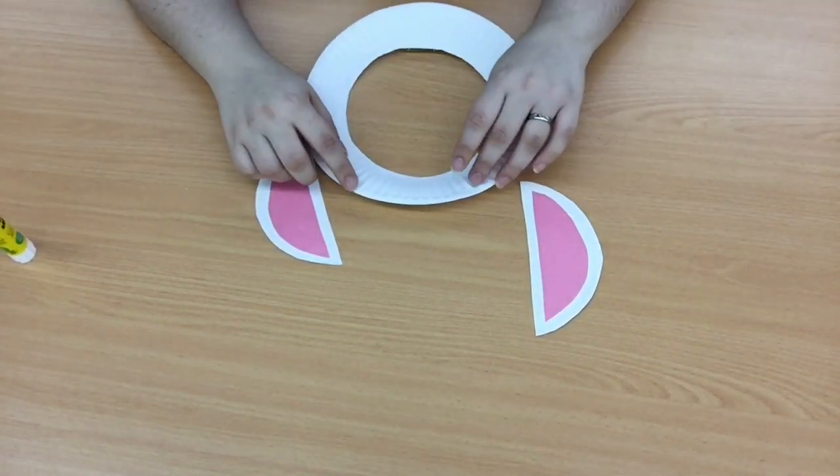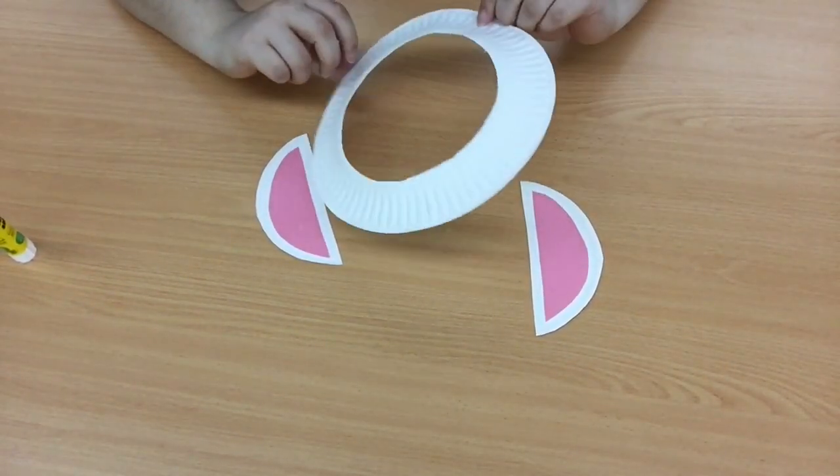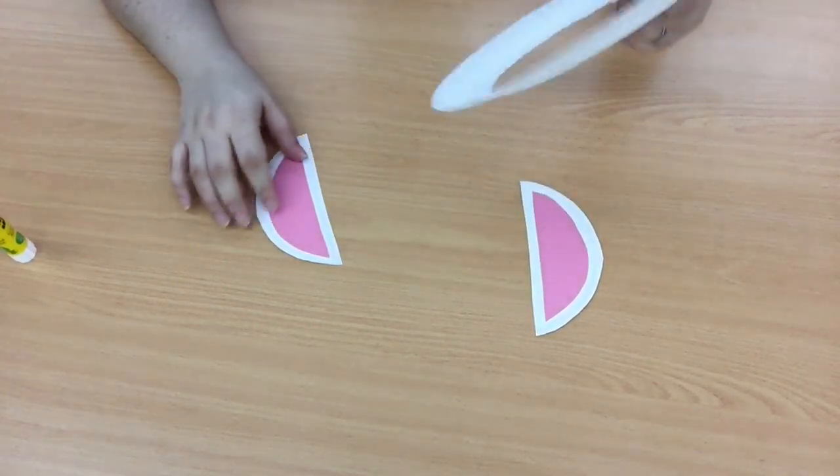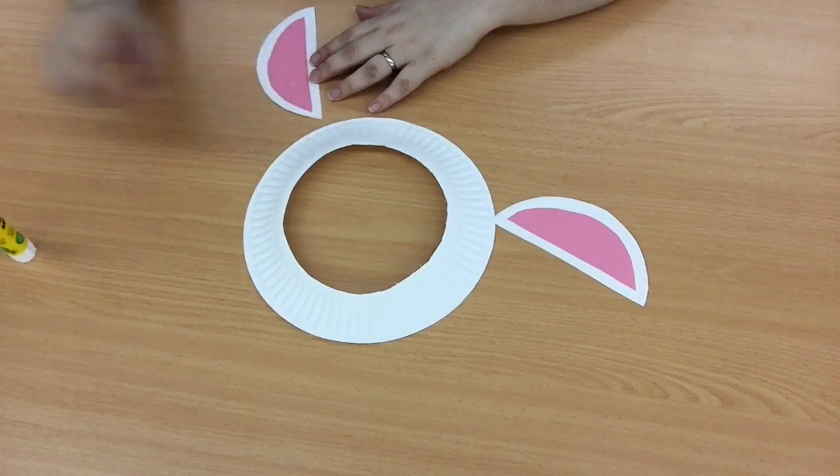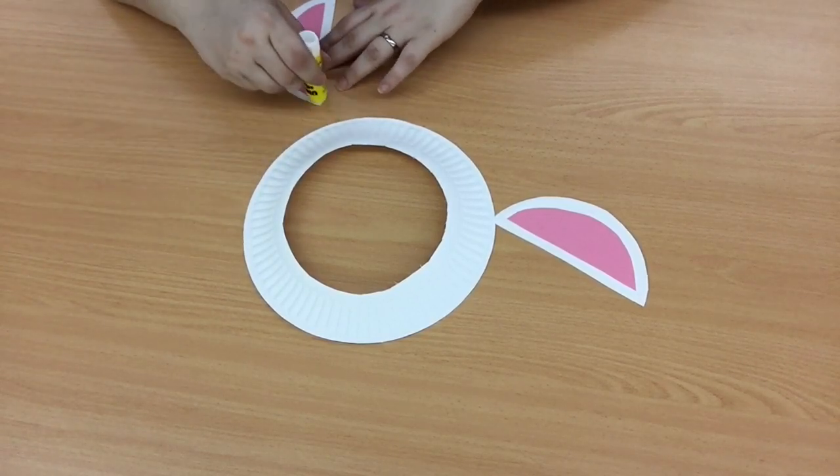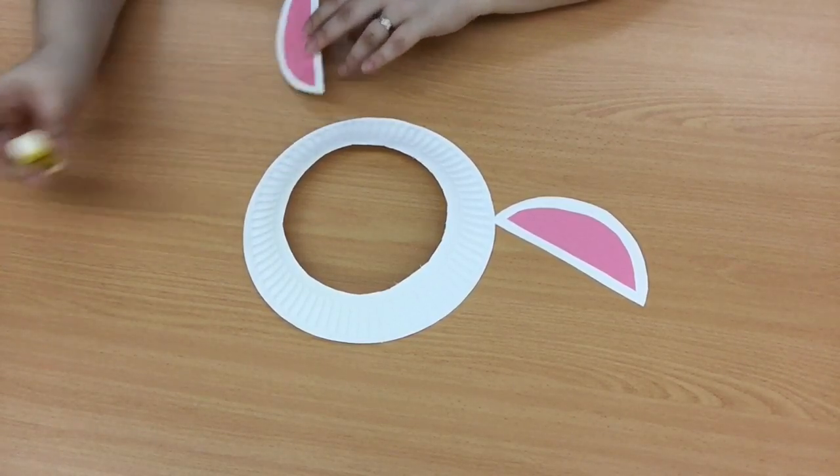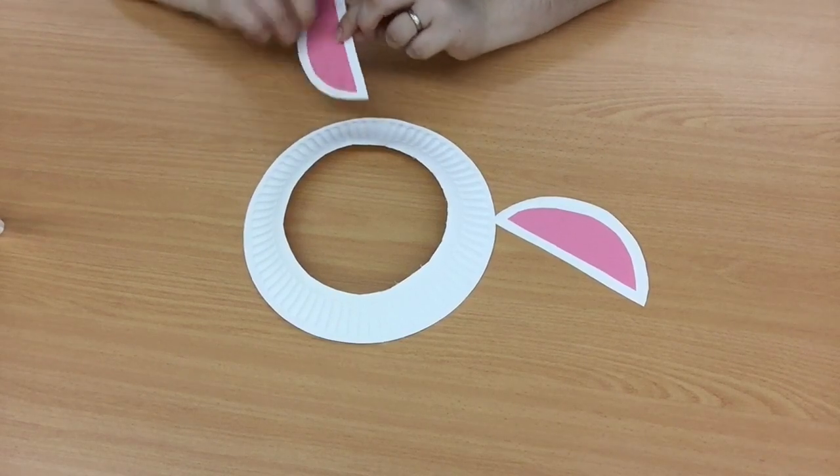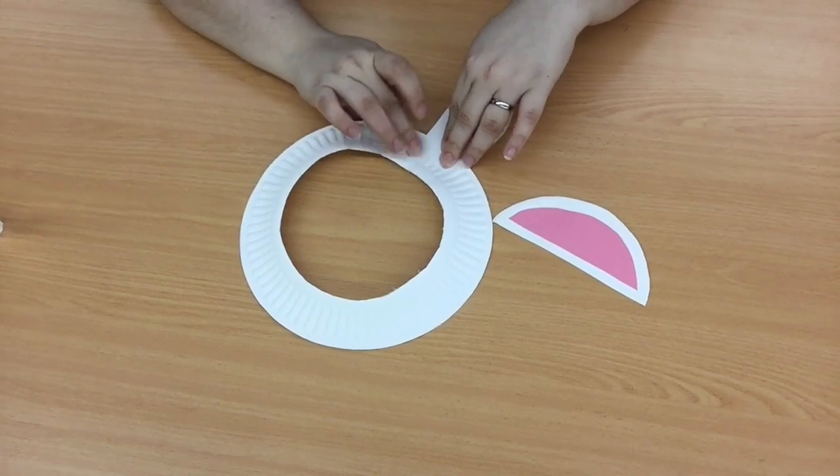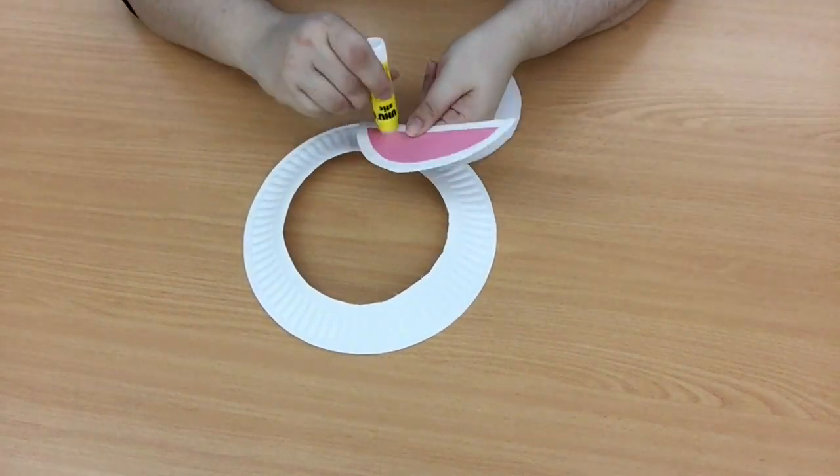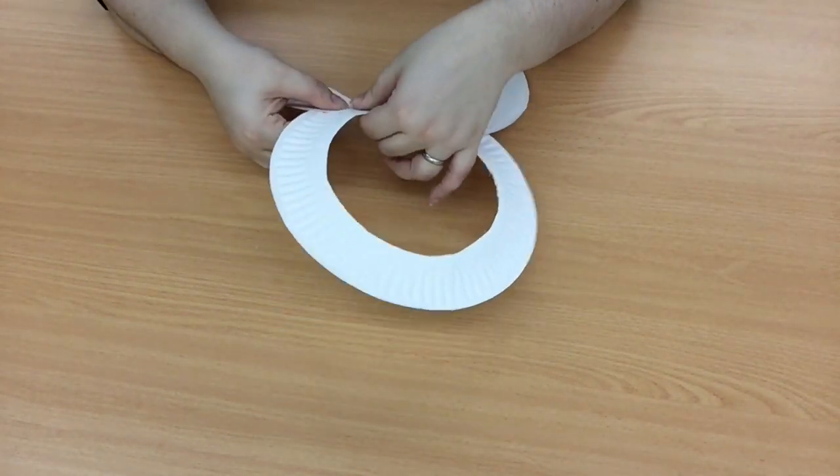Now we need our paper plate, our bunny ears and some glue. Carefully take in your bunny ears. You're going to glue them generously and firmly place them on your plate. Give them a good little squish. And now we're going to do the same thing with our other ear.